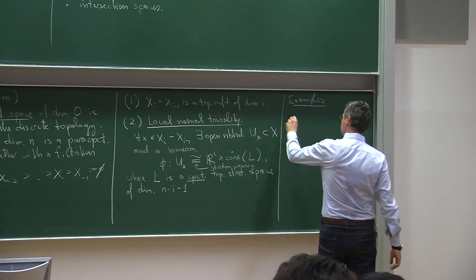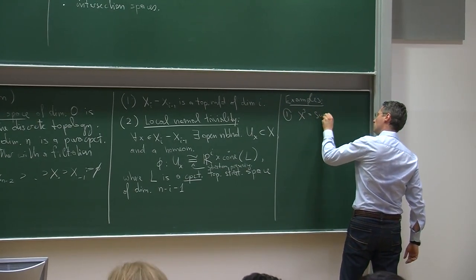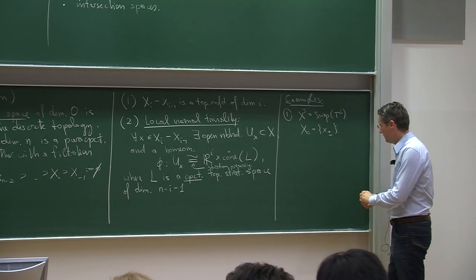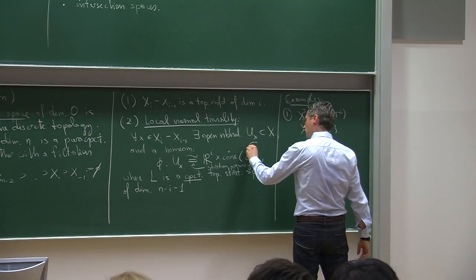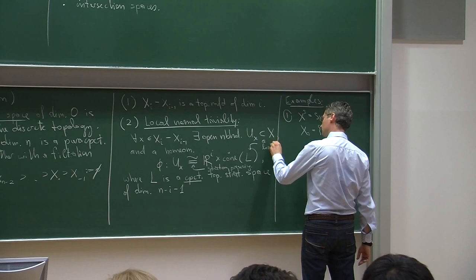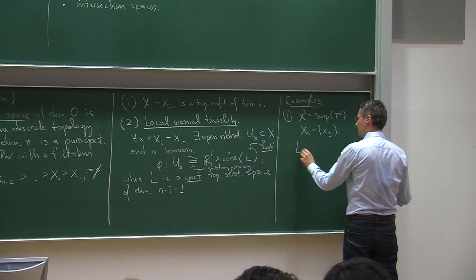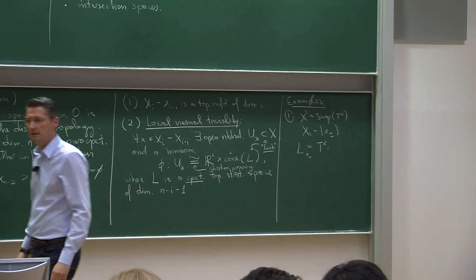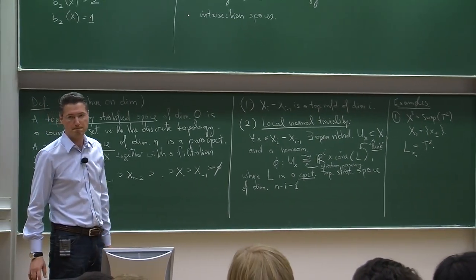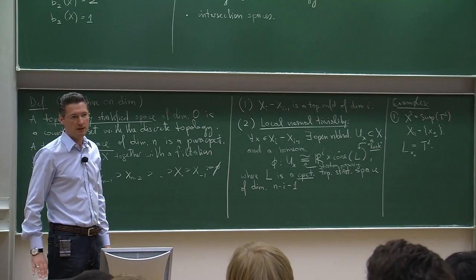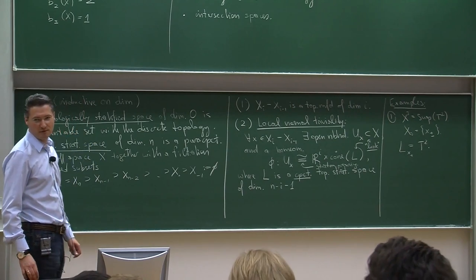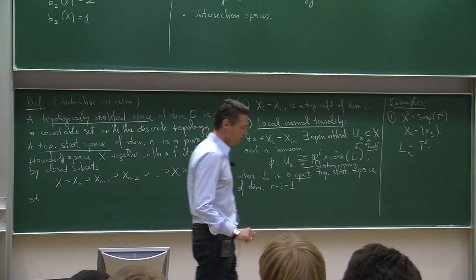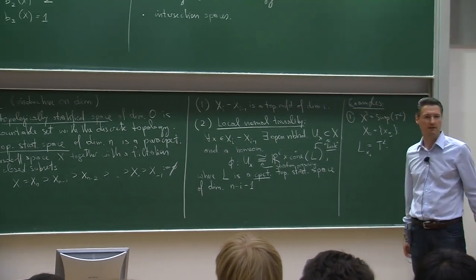We've already seen example one: the suspension of T², where X_0 = {x⁺, x⁻}. The space L — called the link — for the point x⁺ is just the two-torus T². One must be careful: the link in topologically stratified spaces is not uniquely defined. You cannot speak of 'the link' at a point of a stratum, because Milner produced examples of two non-homeomorphic links whose cones are homeomorphic. This was observed by Siebenmann.